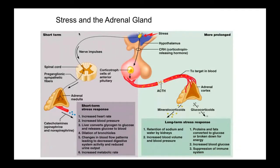On the right half we have prolonged stress. On the left-hand side, short-term acute stress, we see a different path — from the hypothalamus there are direct signals to the spinal cord, then a neurological pathway to the adrenal medulla, the inside of the adrenal gland, where we see catecholamines like epinephrine and norepinephrine. This is a short-term stress response.